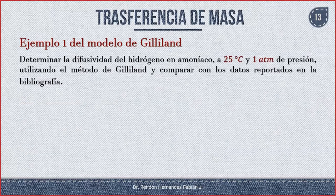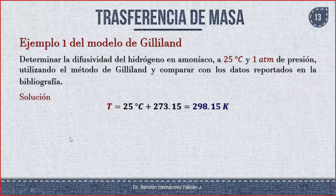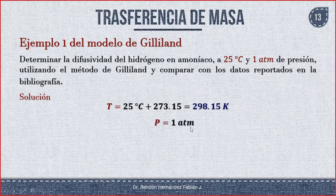Tenemos un ejemplo del modelo de Gilliland. El problema dice: determinar la difusividad del hidrógeno en amoníaco a 25 grados Celsius y una atmósfera de presión, utilizando el método de Gilliland y comparar los datos reportados en la bibliografía. La temperatura tiene que estar en Kelvin: 25 + 273.15 = 298.15 K. La presión ya sabemos que es una atmósfera.